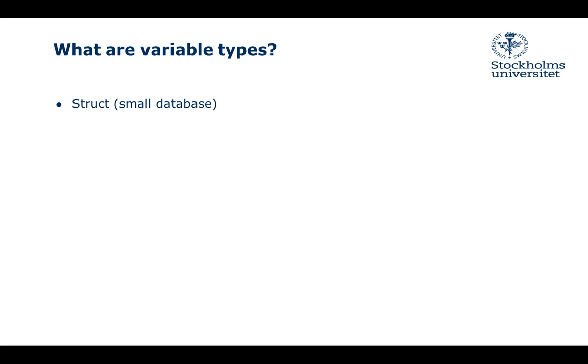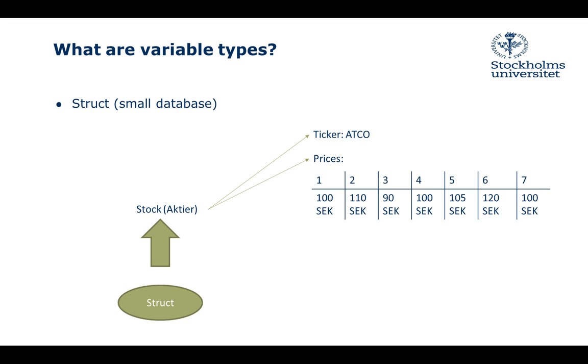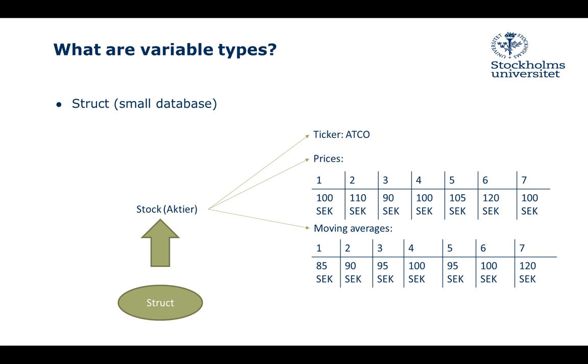So structs, or lists in R - think of it as a small database. It's an aggregate of all other things. Let's think about a stock. We'll call it a struct because it has features: ticker, for example Atlas Copco ATCO, then prices which are historical prices - just random numbers here that should represent prices.